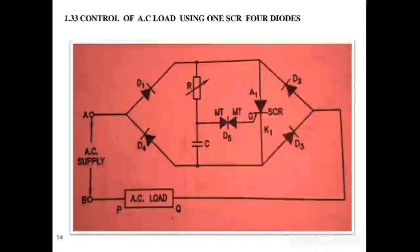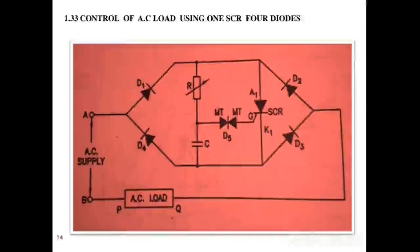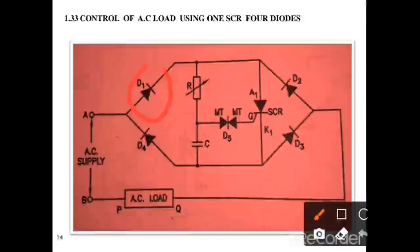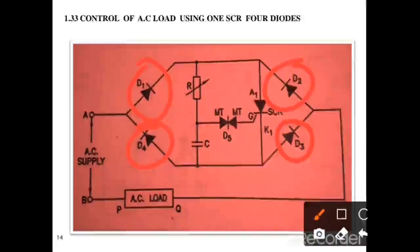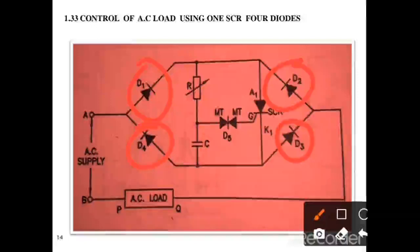Now, this is the circuit for control of AC load using 1 SCR and 4 Diodes. There are 4 diodes — D1, D2, D3, and D4 — arranged in a bridge circuit to handle both the positive half cycle and negative half cycle.